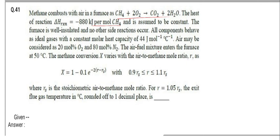Air may be considered as 20 mole percent oxygen and 80 mole percent nitrogen. The air-fuel mixture enters the furnace at a given temperature. Conversion of methane varies with the air-to-methane mole ratio R. Rs is the stoichiometric air-to-methane ratio. If R equals 1.05 times Rs, what is the temperature of the flue gas at the exit?